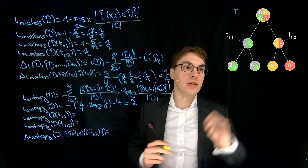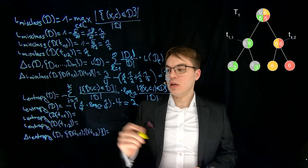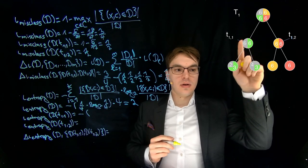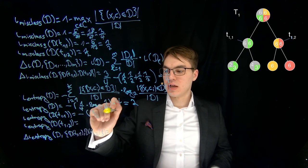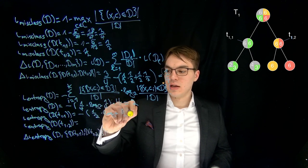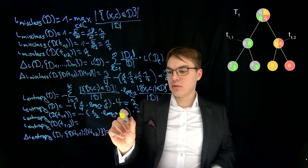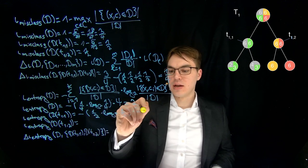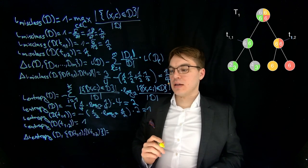Now let's compute the entropy for the left subtree. We get minus the sum over all colors — each has a fraction of one half — so one half times log base 2 of one half, summed twice. Log base 2 of one half is minus one, which cancels out, giving us one. And the right subtree is exactly the same, so we also get one.